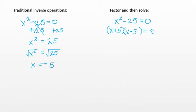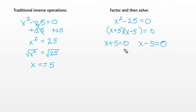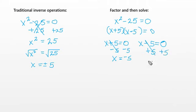So we write x plus 5 equals 0 and x minus 5 equals 0, then use inverse operations on each. Subtracting 5 from both sides gives x equals negative 5, and adding 5 to both sides gives x equals 5. So x could be negative 5 or positive 5 — the same result as the traditional inverse operations method.